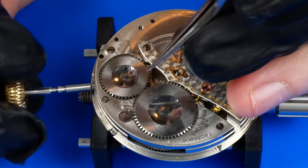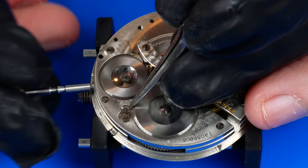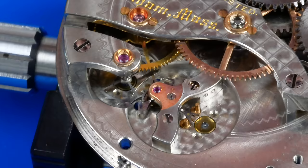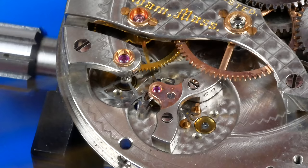I'm using a spare crown and stem to let down the power of the main spring. The click is held back while I control the unwinding of the spring with the crown. With the power let down, I can proceed with disassembling the train.